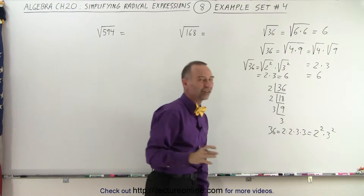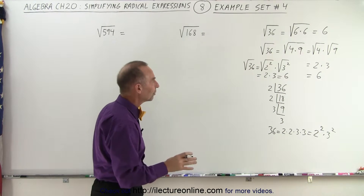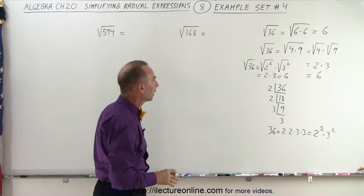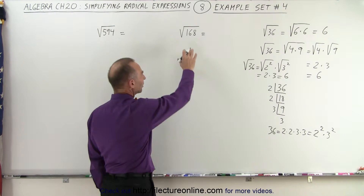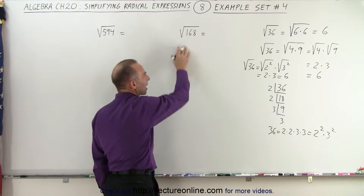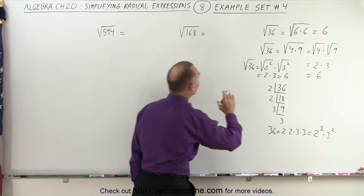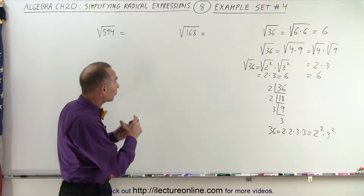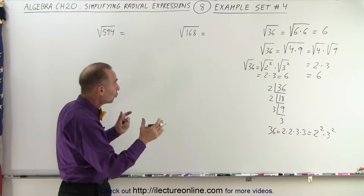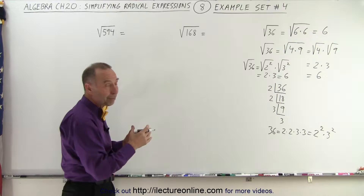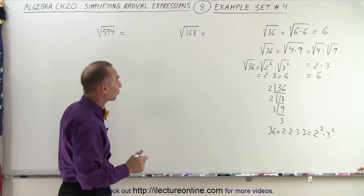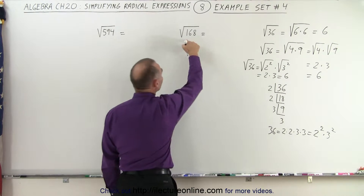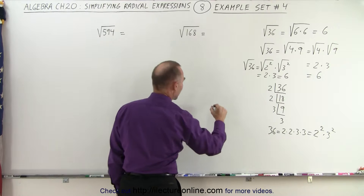Notice there are a lot of different paths to get to the same final solution. Now, on something like the number 168, this prime factorization technique works well, because you may have trouble figuring out how to separate that into two factors whose square roots you can take. So let's use this technique on 168.